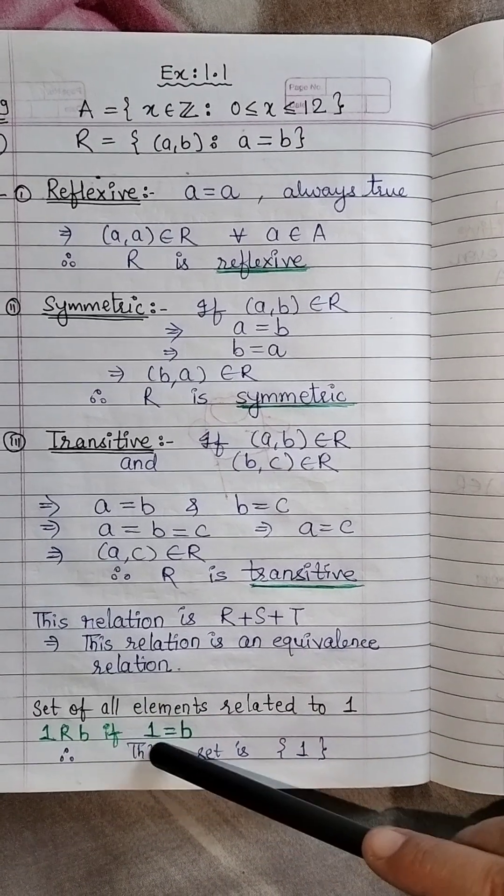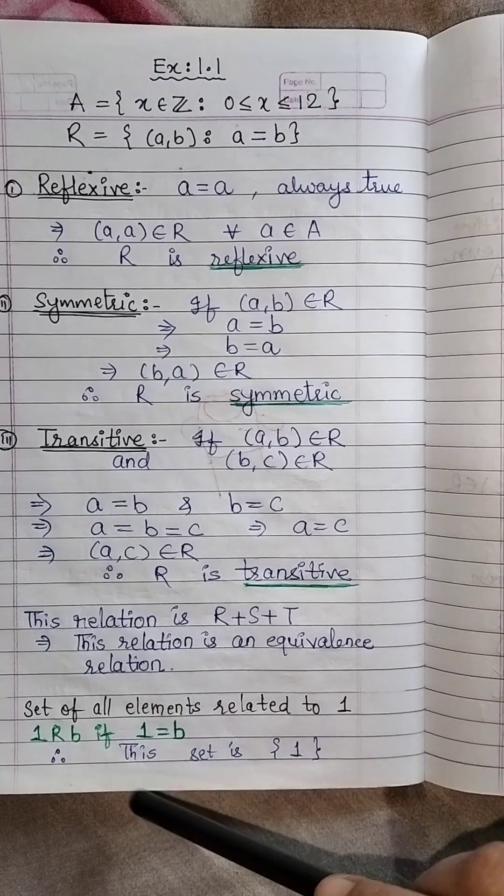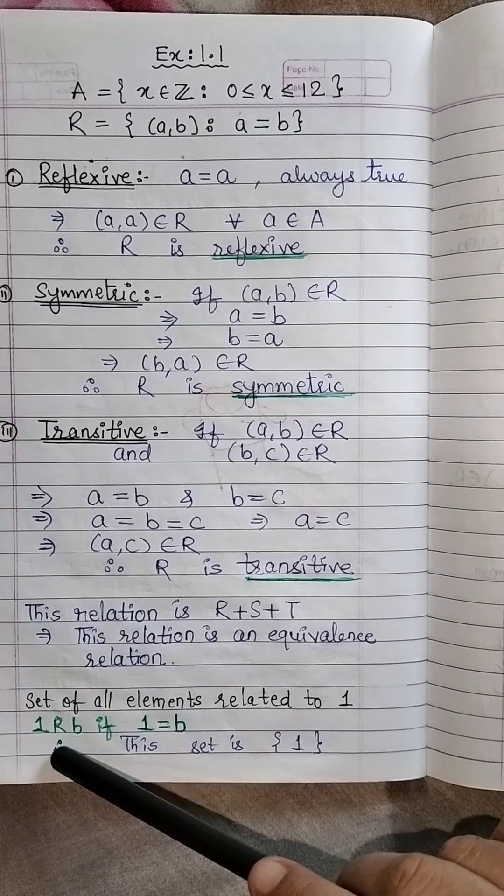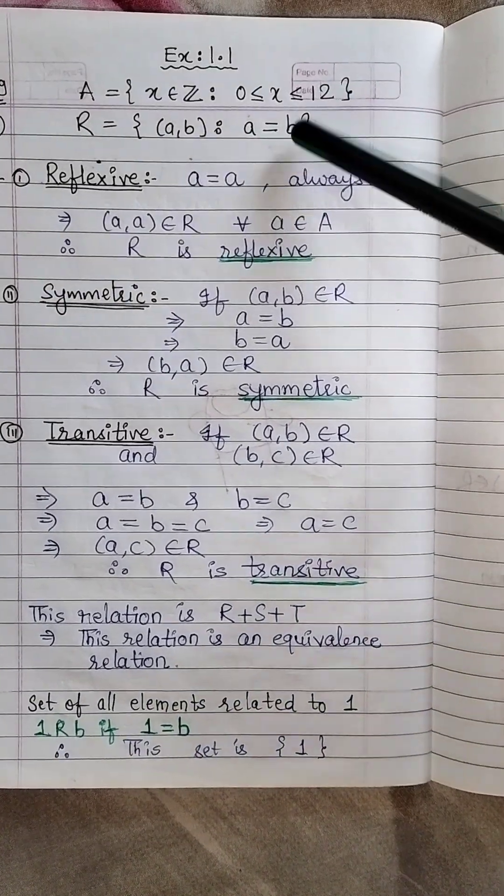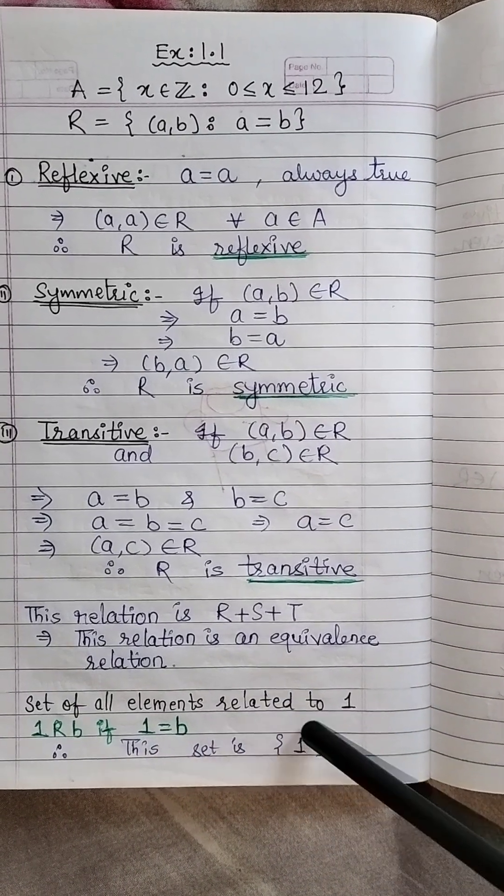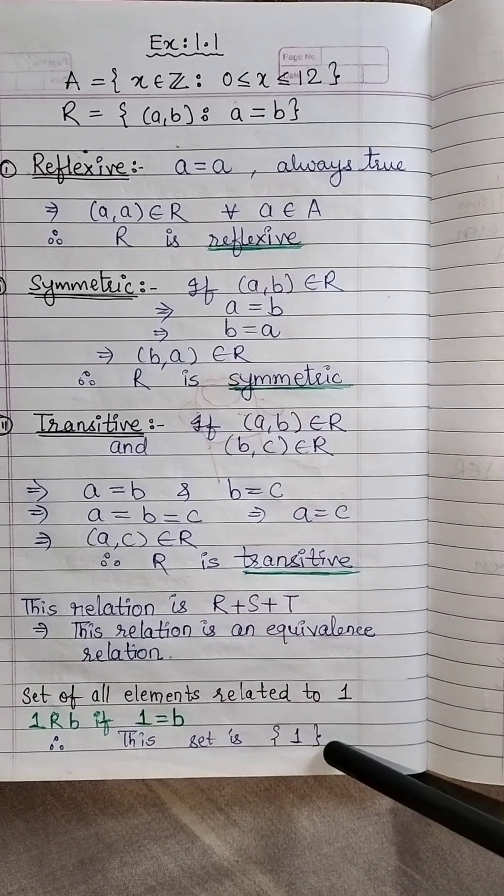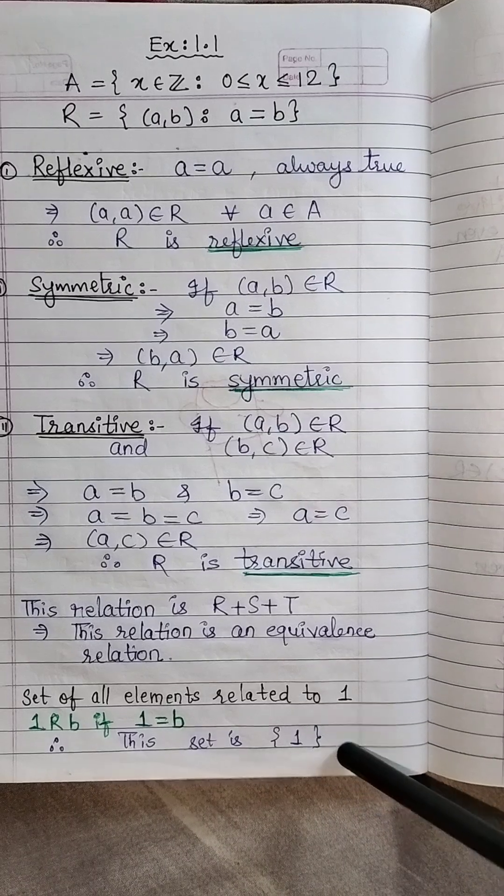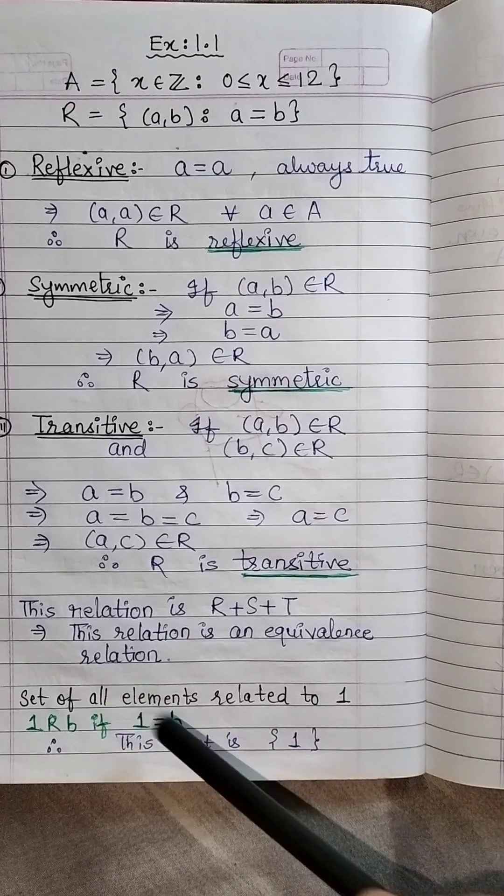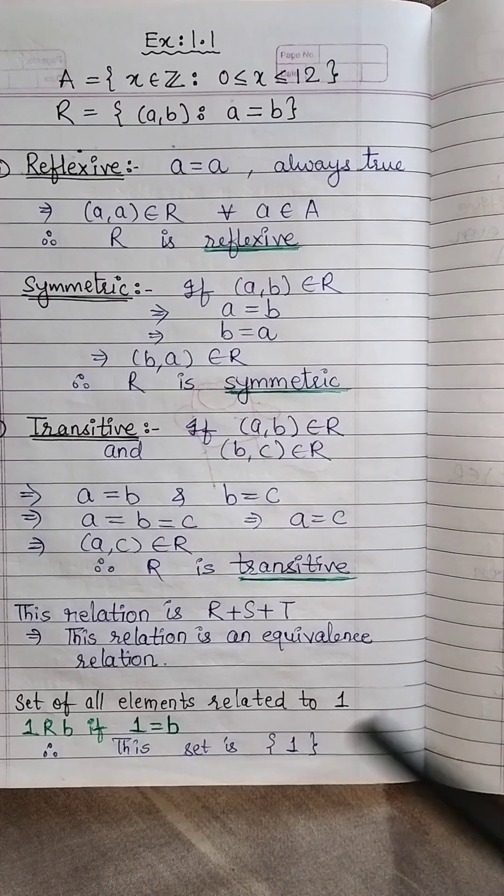Now you have to find a set of all those elements that relate to 1. That means you have to find all those elements which are equal to 1. Because what is the relation given? That is equal to 1. So you have to find all those elements. But you have only 1 that relate to 1 because 1 is equal to 1 only. So the set that is related to 1 is only this set 1 single set.